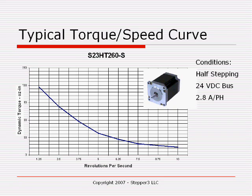Here is a typical torque speed curve for the Stepper 3 Iconistep S23HT260S motor, which is one of their best-selling motors. At 1.25 revolutions per second, you get approximately 190 ounces of dynamic torque available. The holding torque of this motor is 260 ounces. At 2.5 revolutions per second, it drops to approximately 140 ounces of torque. At 5 revolutions per second, you only get roughly 65 to 70 ounces of torque.